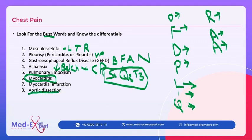Aortic dissection should be considered, as well as pancreatitis. Aortic dissection is associated with Marfan syndrome.